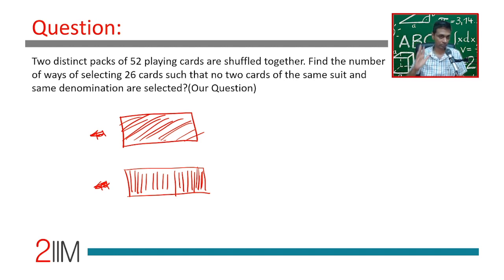How am I going to do this? 26 cards selected, no two cards of the same suit and same denomination. Basically, we're not selecting the same card from both packs—not four of diamonds from both packs, or king of hearts from both packs, or three of clubs from both packs. We are not selecting the same thing.